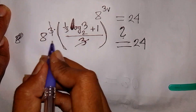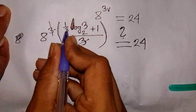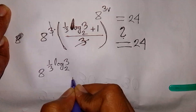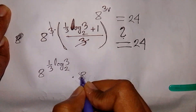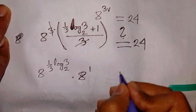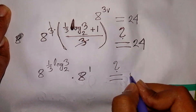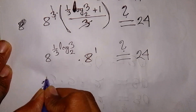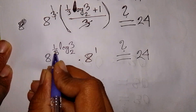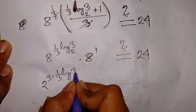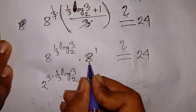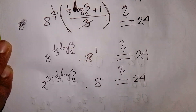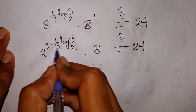We now apply the exponential rule. It will be 8 power of (one-third·log base 2 of 3) times 8 power 1. Here 8 is the same as 2 power 3, multiplied by the power one-third·log base 2 of 3. Then 8 power 1 is simply 8. This 3 and this one-third cancel.